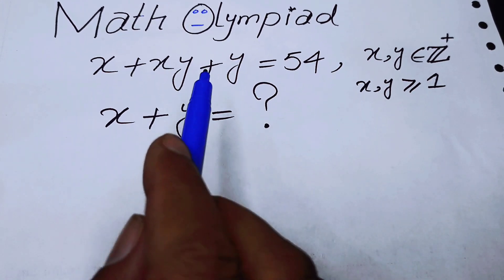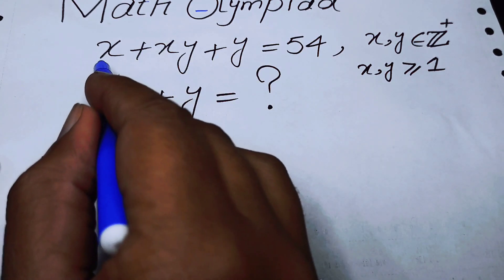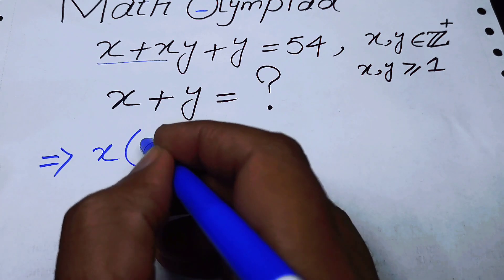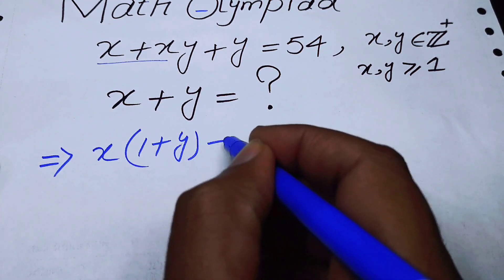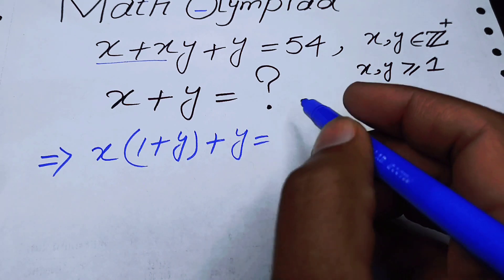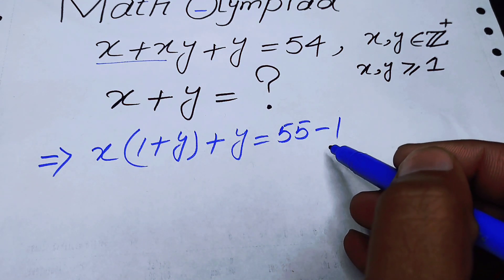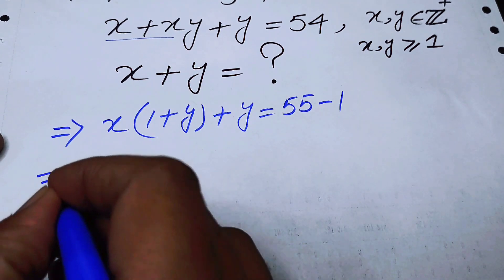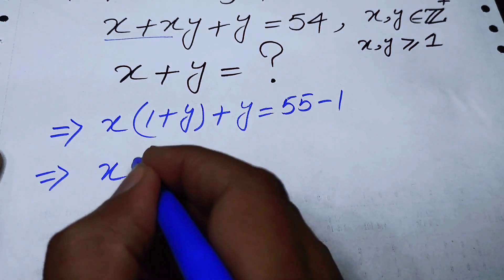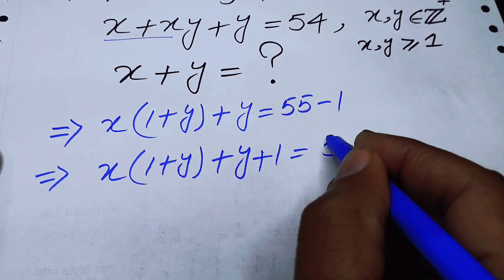The first thing we are going to do is simplify this equation. We take x common from the first two terms to get x(1 + y) + y = 54. Now I rewrite 54 as 55 - 1, then move the -1 to the left side, giving us x(1 + y) + y + 1 = 55.